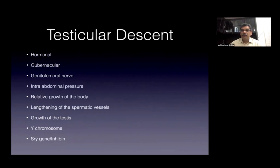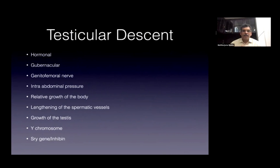Intra-abdominal pressures, relative growth of the body — these rationales emerged because most children with mal-descent testes and lower fertility rates are significantly born small for gestational age. There was also a postulation that the spermatic vessels would not lengthen, the Y chromosome, the inabin — a lot of things have been said in terms of testicular descent, but none has been proven as the primary etiology for mal-descent.